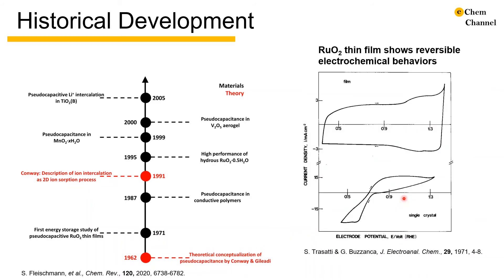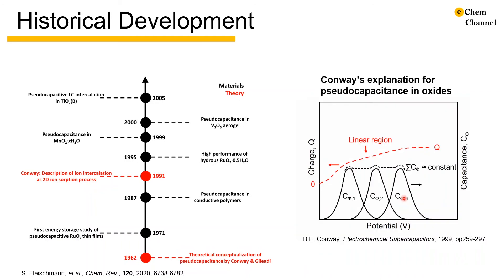In 1971, Trasatti and Buzzanca discovered that the thin film of RuO₂ showed highly symmetric and reversible cyclic voltammograms, in contrast to single crystal RuO₂. In a 1974 paper, they noted that RuO₂ film electrodes behave as a very large capacitor capable of being charged and discharged reversibly without any modification in crystal structure or properties.